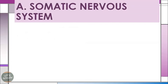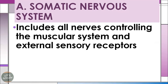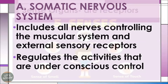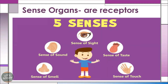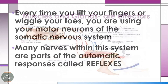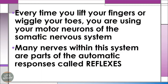Within the peripheral nervous system, there is the somatic nervous system, which includes all the nerves controlling the muscular system and external sensory receptors. It regulates activities that are under conscious control, such as muscle movement. Every time you lift your fingers or wiggle your toes, you are using the motor neurons of the somatic nervous system. Many nerves within this system are part of automatic responses.